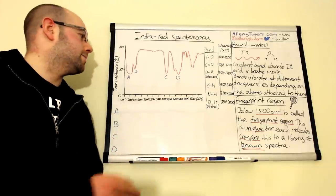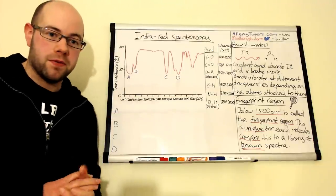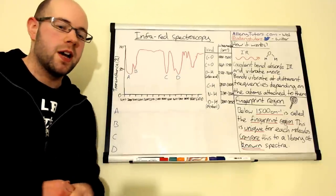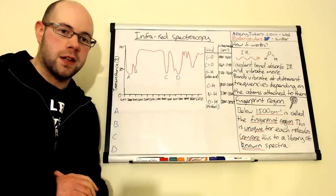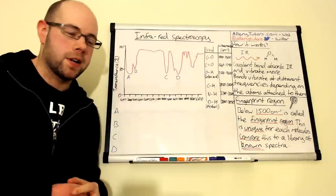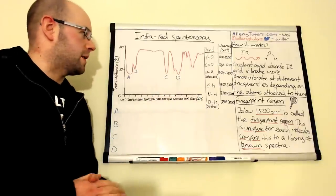So we're just going to look at an example of an infrared spectra because they look really messy but actually they're not too bad to interpret. I'm going to show you how we can do that and I'm going to talk about the fingerprint region as well.